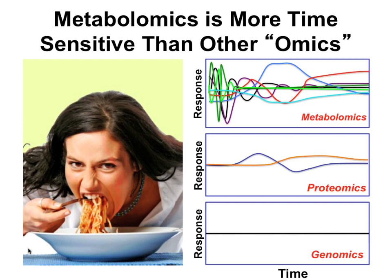The metabolome is also time-sensitive. What you eat changes your metabolome quickly and profoundly — literally hundreds or thousands of metabolites rise and fall over the course of minutes or a few hours. If you eat something, proteins like insulin and ghrelin change too, but gradually. And what you ate this morning hopefully isn't changing your genome — the genome is essentially static and does not change.